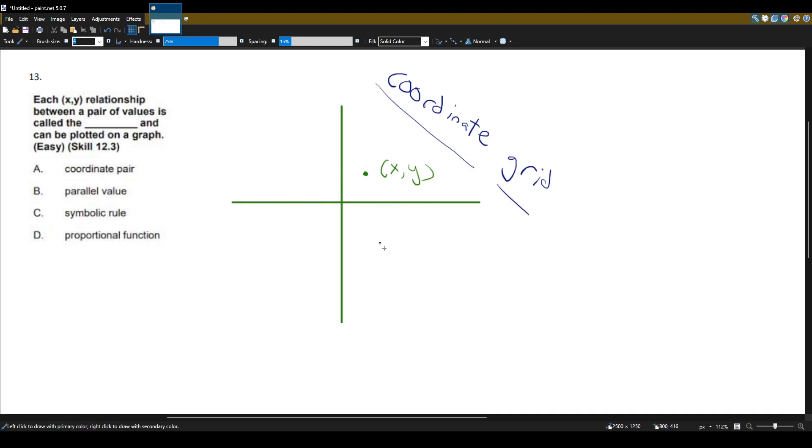Think about two socks that are next to each other. What do you call these? You call them a pair, a pair of socks. So, this is a pair, and this is a coordinate, so it's a coordinate pair.